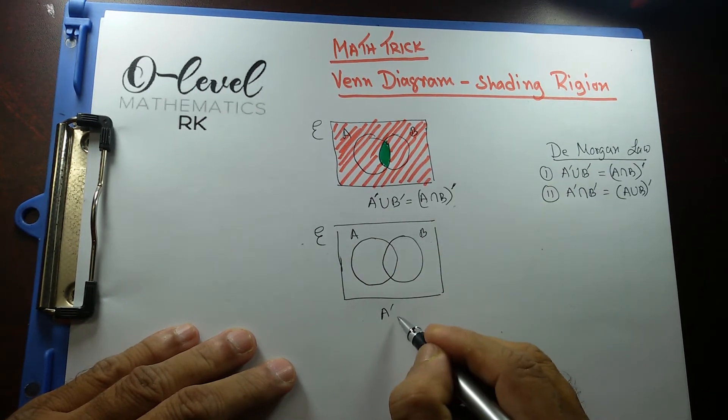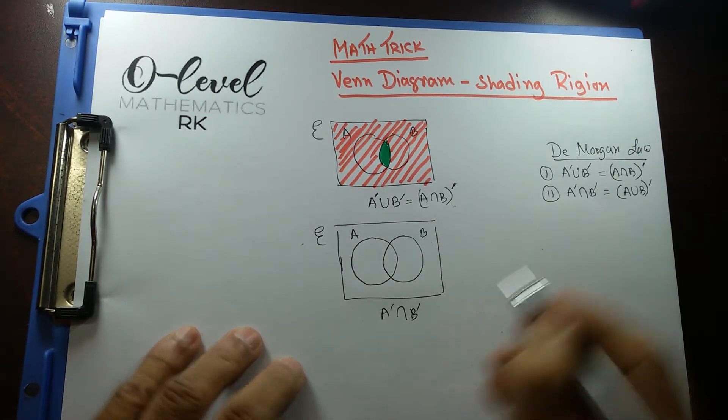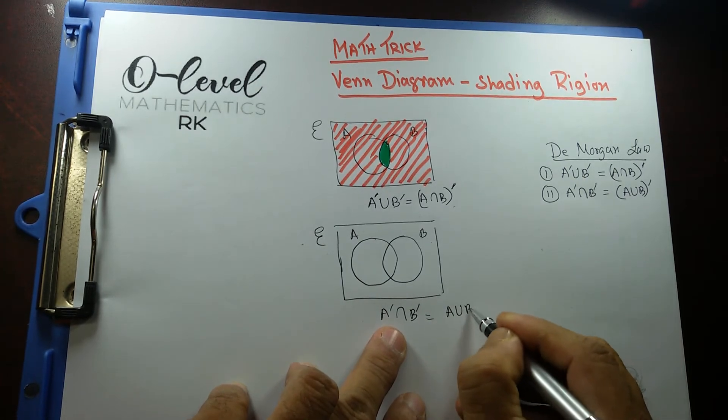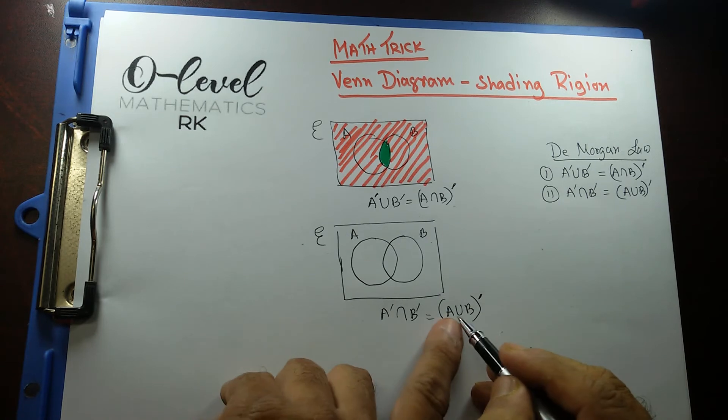And this time it says A prime intersecting B prime. Again, we're going to use De Morgan's law. And we're going to say A union B whole prime. We know A union B.